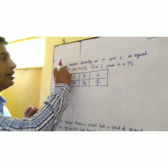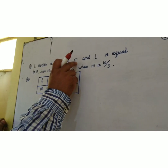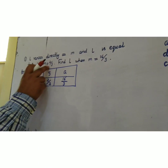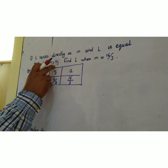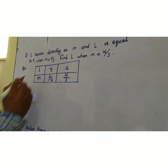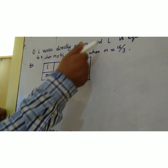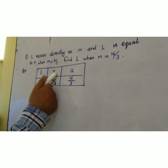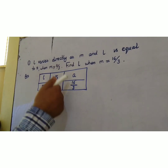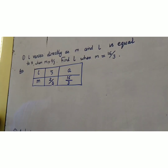First question: L varies directly as M, and L is equal to 5 when M is equal to 2/3. Find L when M is equal to 16/3. We have L and M. When L is 5, M is equal to 2/3. We have to find L — suppose it is A when M is equal to 16/3.